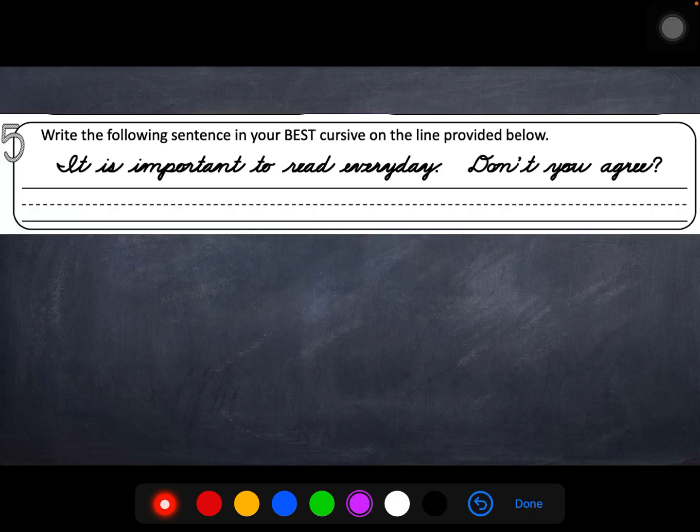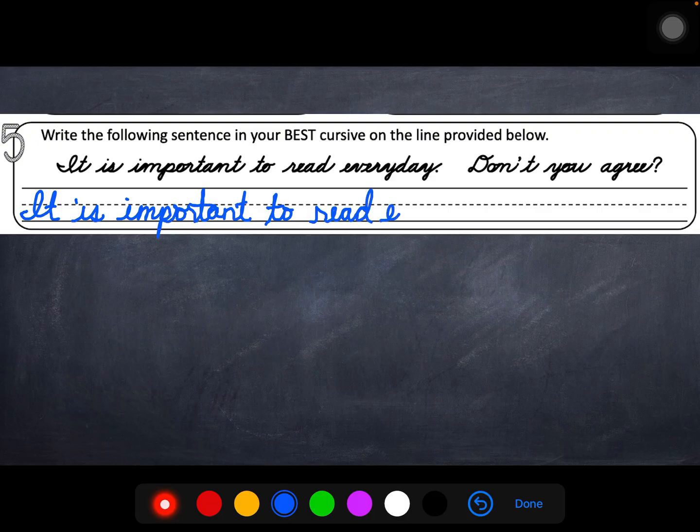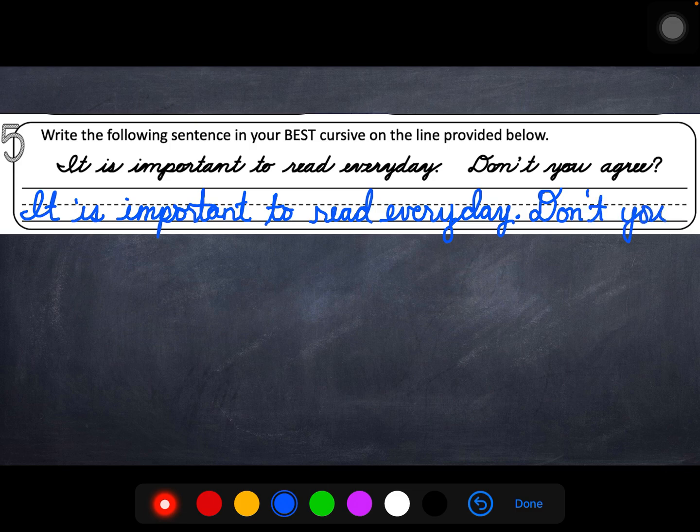Number five. Write the following sentence in your best cursive on the line below. It is important to read every day. Don't you agree? Let's see where they're getting their question marks in there. So it is. Notice when I do these, the things that go above and below the lines, like that tall T. It is important to read. Here comes the tall D. Every. Here comes the Y that goes down below. D that goes up. Y that goes below. And then don't. D's are kind of tricky to make. Don't you agree? Question mark.